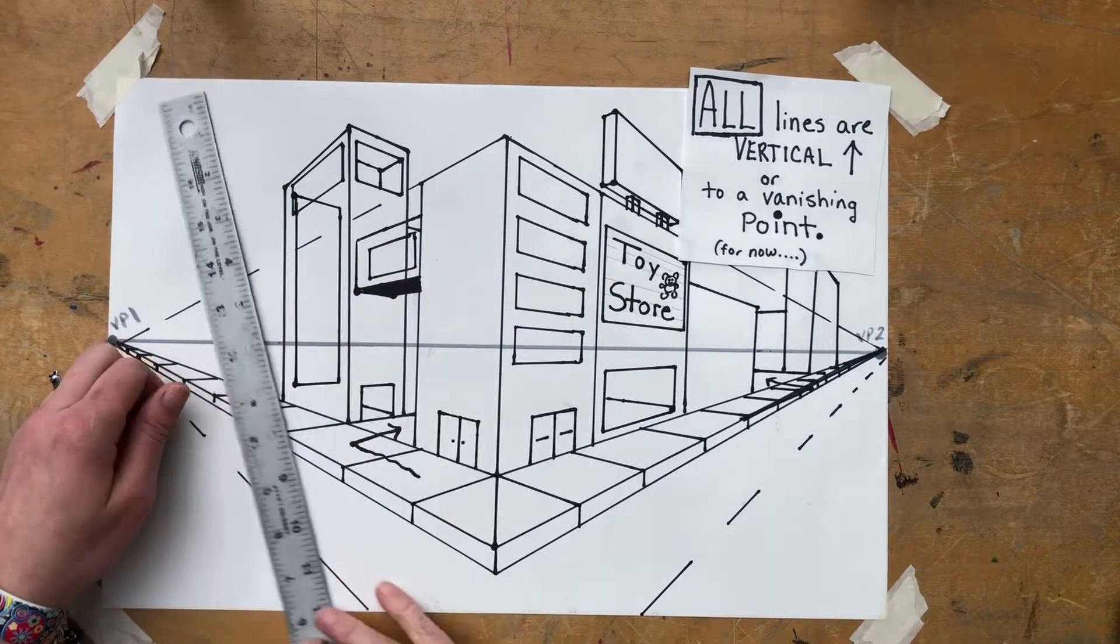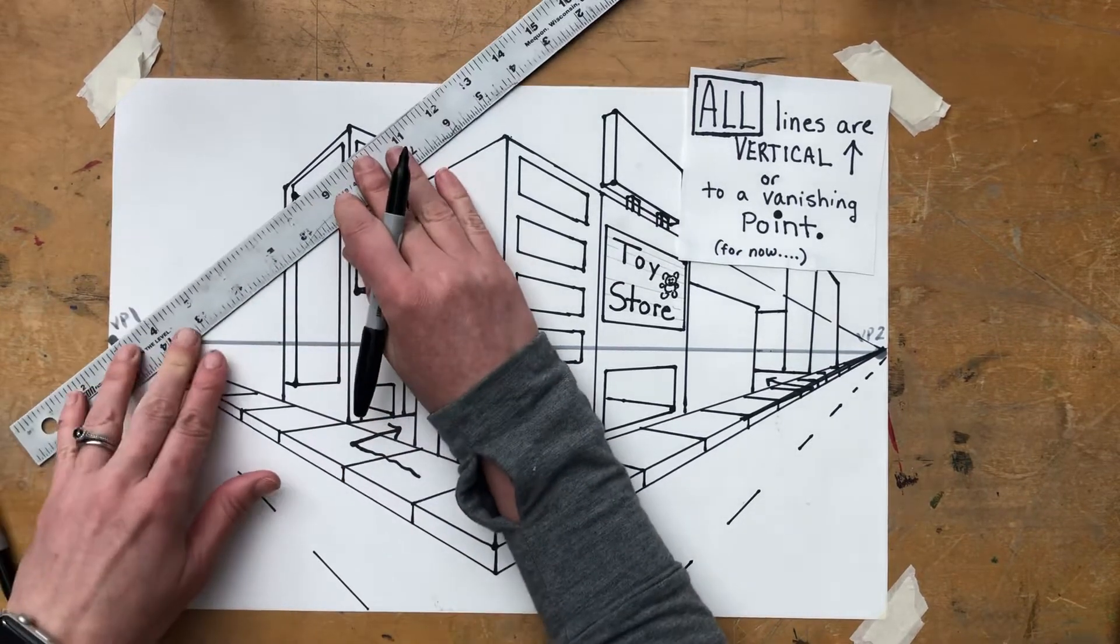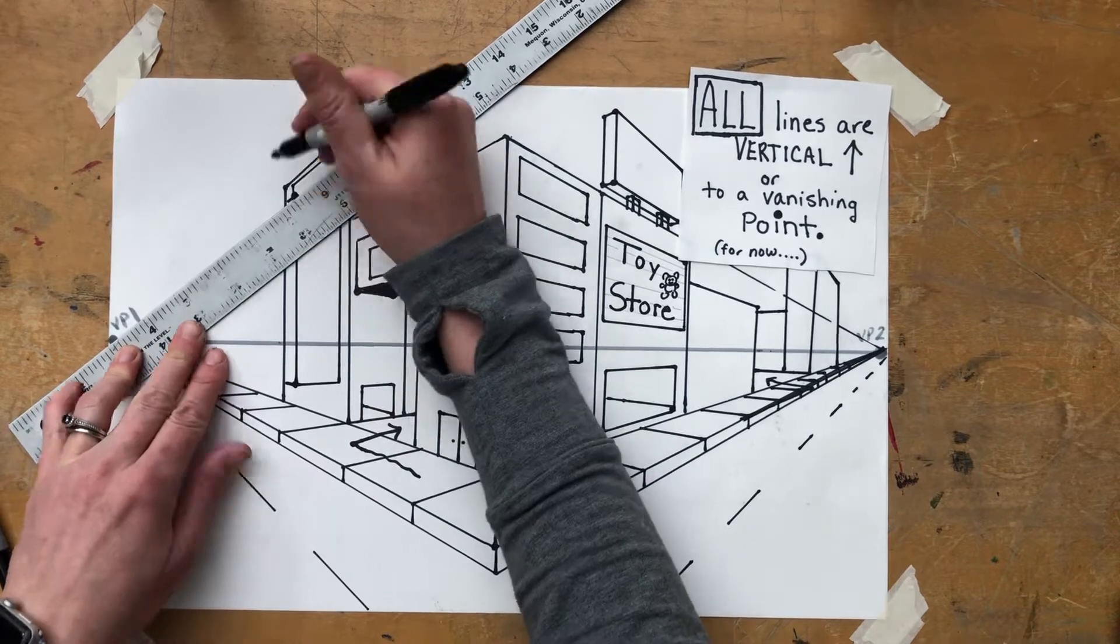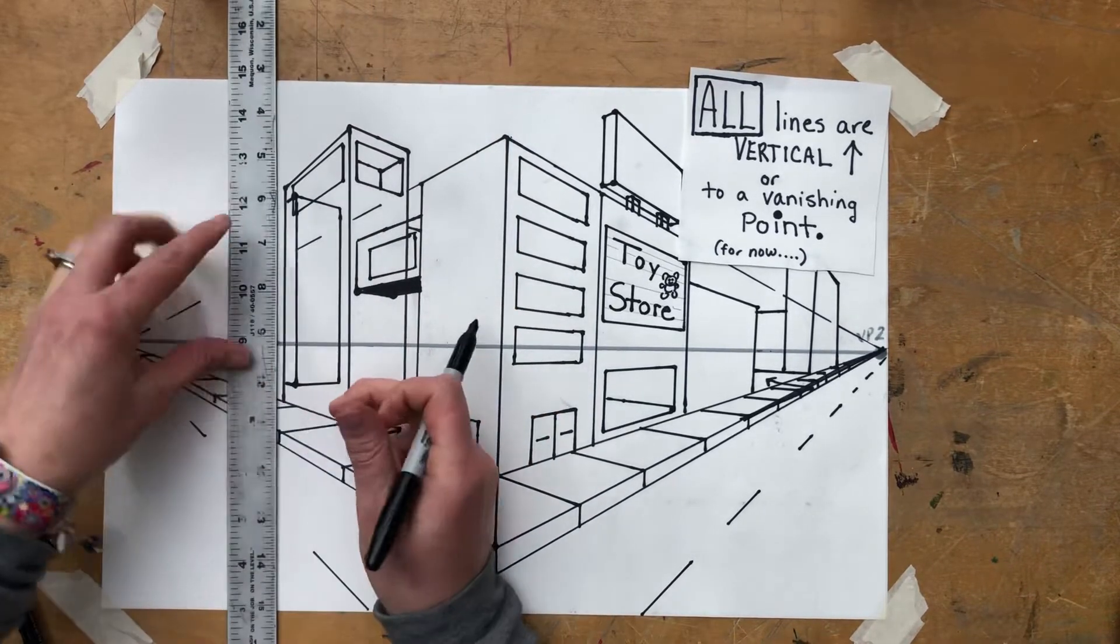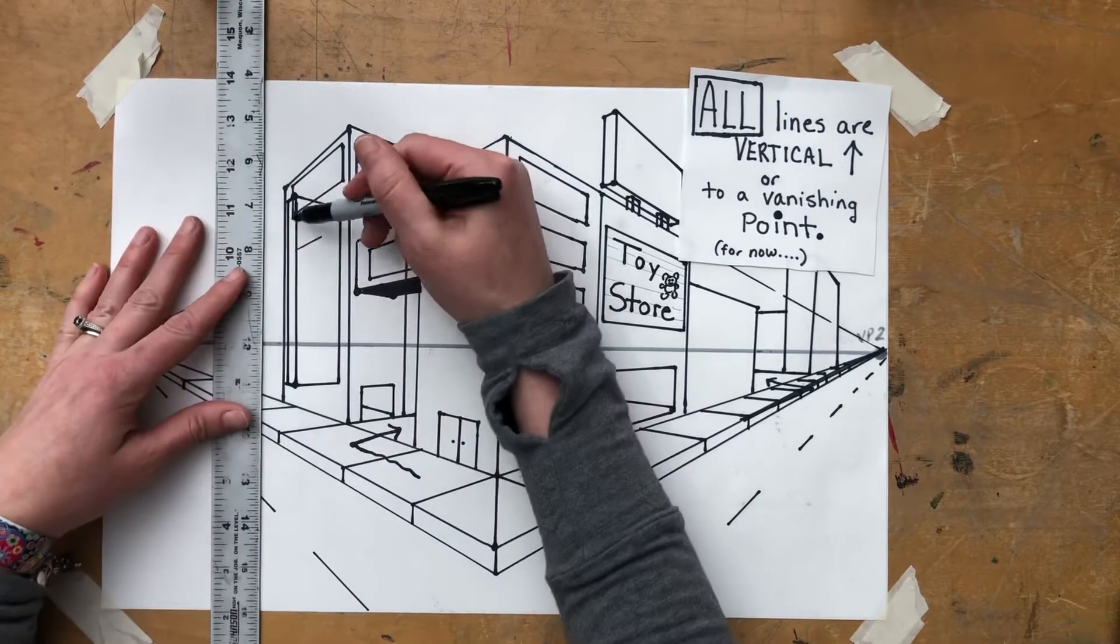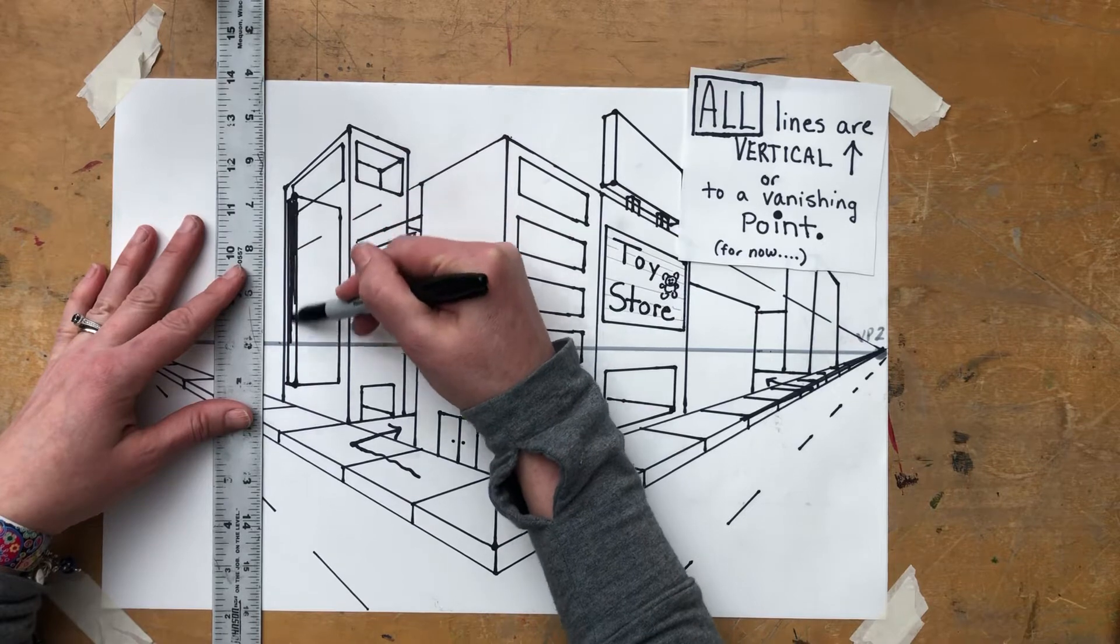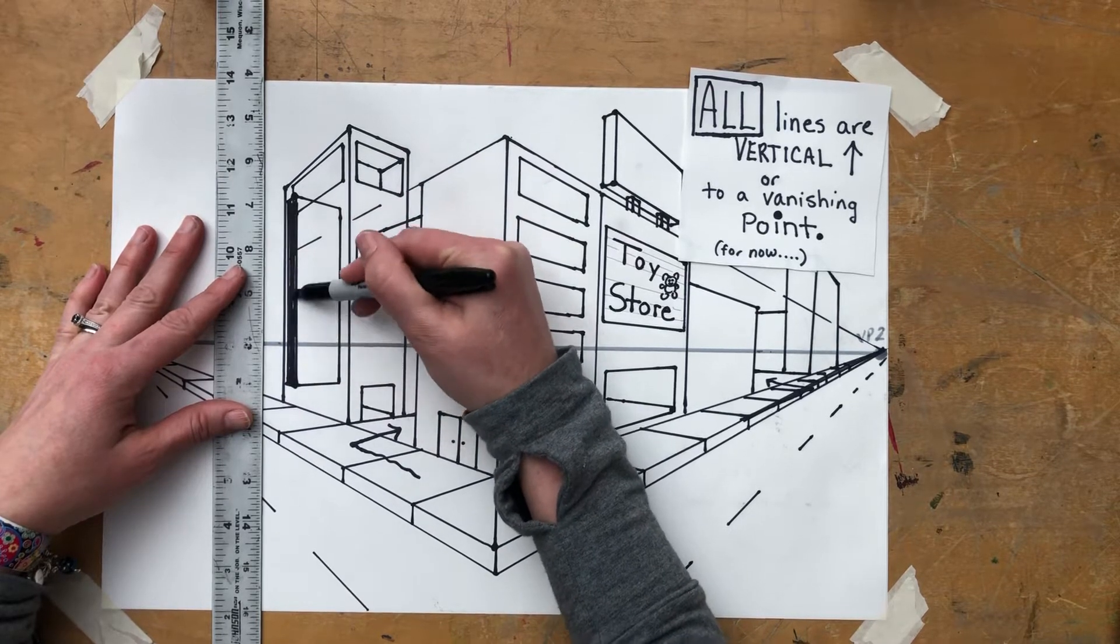And another vertical line down, now we have an edge to it. Maybe I'll fill that edge in to make it a little more three-dimensional. That's the edge of the sign.